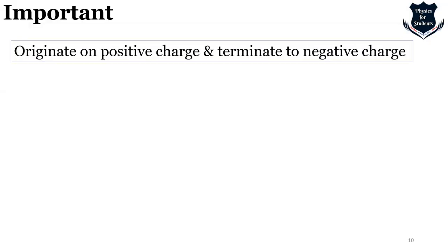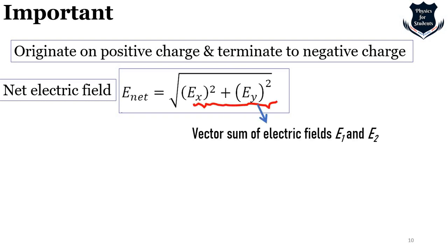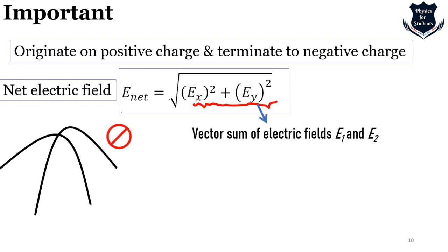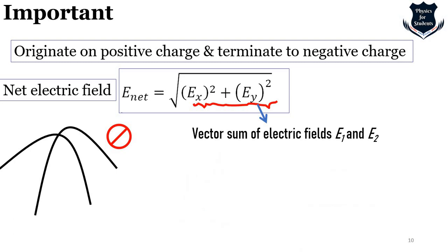Electric fields originate on positive charges and terminate on negative charges. The net electric field at a point P is the vector sum of fields E1 and E2. Electric field lines are virtual lines, and a tangent at any point in the field indicates the direction of the electric field.